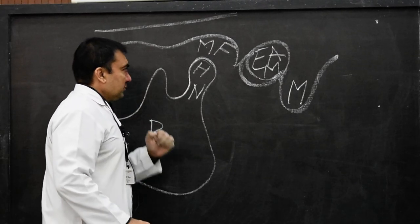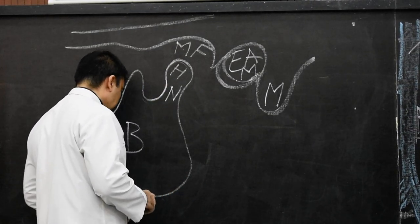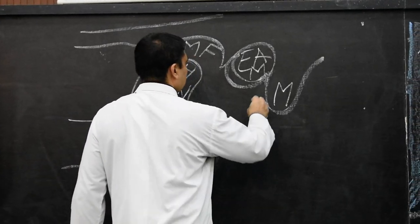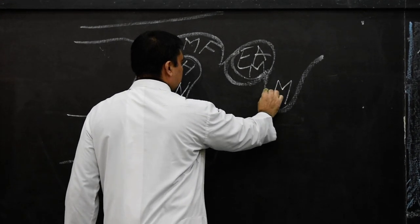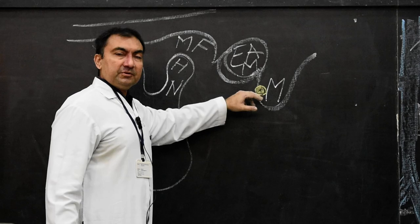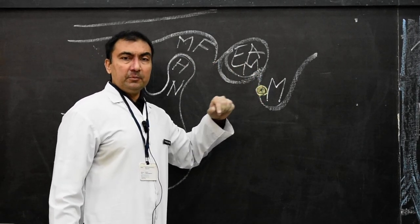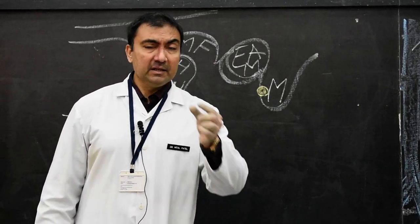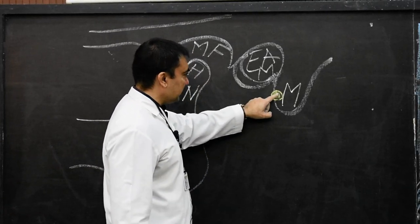Now what we have to mark here: the first point is present at the level of the anterior border of the mastoid process. At the level of the anterior border of the mastoid process is the first point, because exactly at this point, two centimetres deep, will be the stylo-mastoid foramen. Two centimetres deep to this point is the stylo-mastoid foramen, where the facial nerve will exit from the skull from the intracranial cavity.